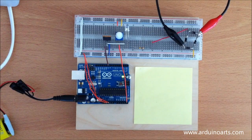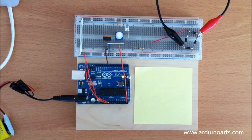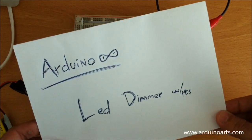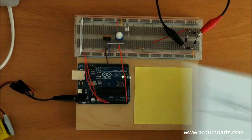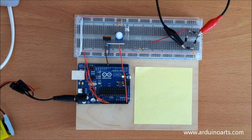Welcome to another ArduinoArts.com tutorial. This time we're doing the OLED dimmer with MOS transistor.